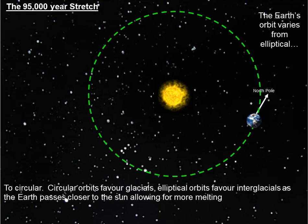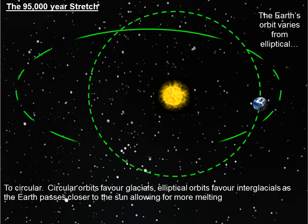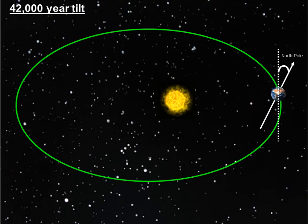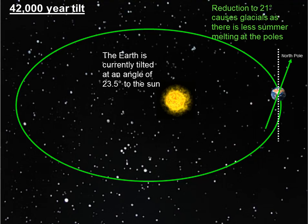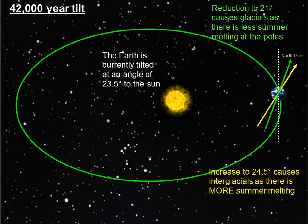It's that circular orbit that promotes glacials. He also proposed a 42,000-year tilt cycle. The Earth is currently tilted at 23.5 degrees to the Sun, but that can change. A reduction to 21 degrees would cause glacials, as there's less summer melting at the poles. An increase to 24.5 degrees causes interglacials, as there's more summer melting.